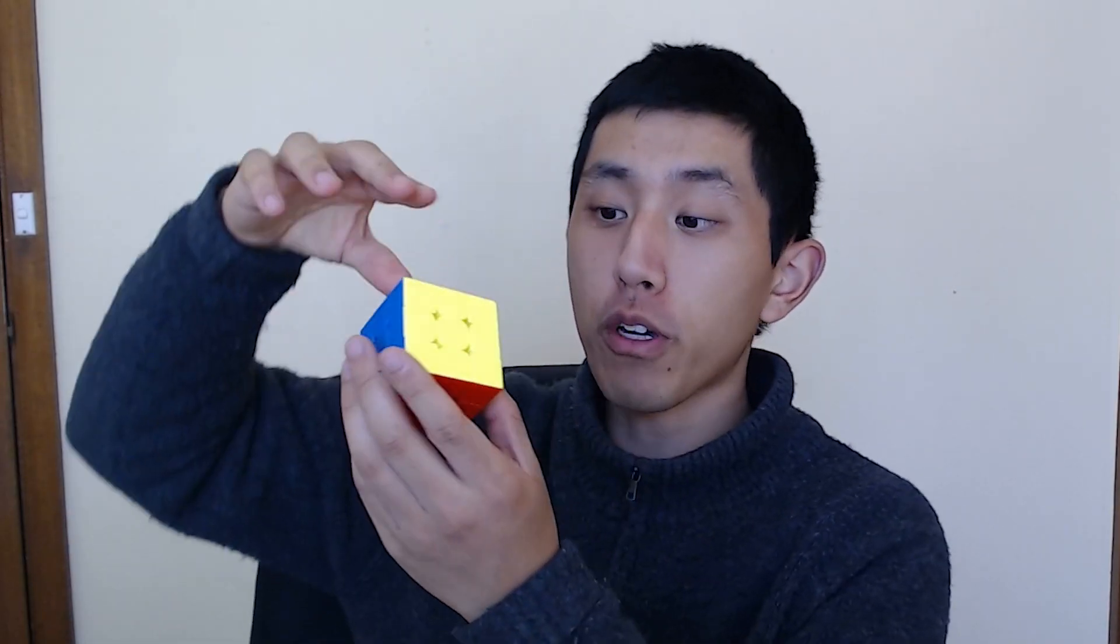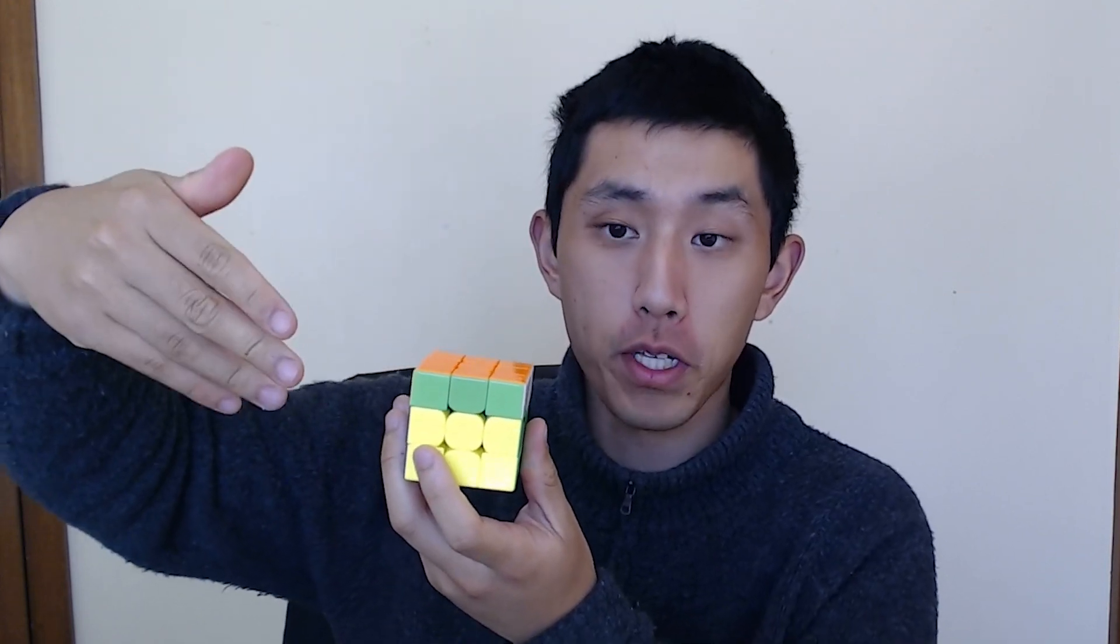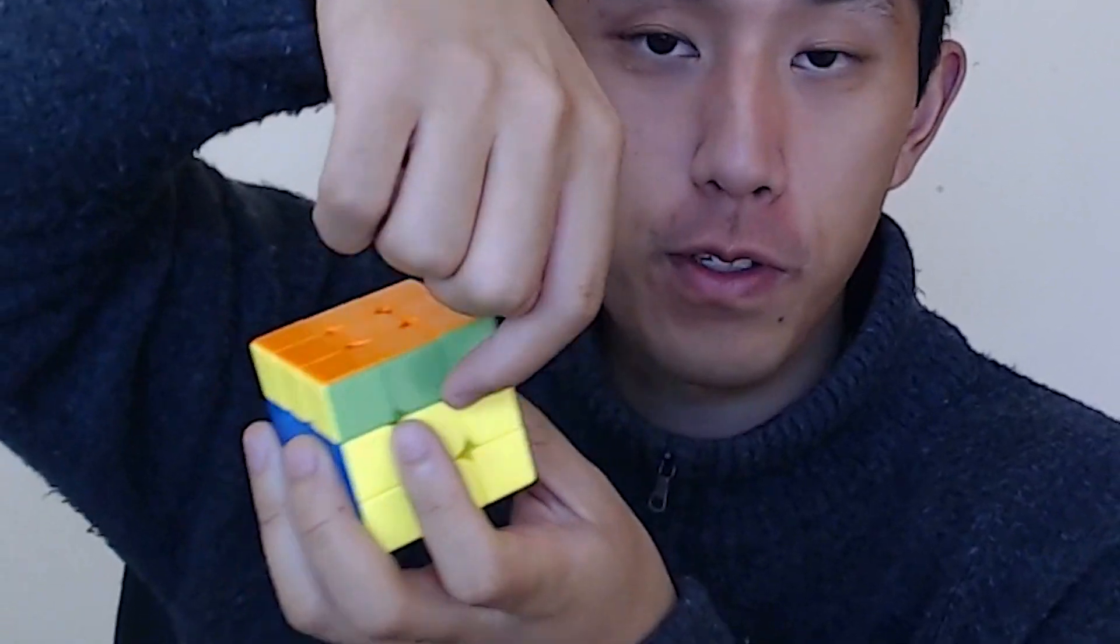So on the Rubik's Cube, every basic turn on the puzzle involves turning one face 90 degrees. And notice how I'm not just moving the stickers on one face, but all of the stickers on the sides as well. More specifically, four corners and four edges, which never overlap with each other. And while there are other types of turns you can do as well, like turning this middle layer, you can pretty much achieve the same thing by doing two basic turns and then rotating the whole cube like this.